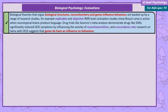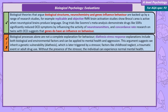Worth remembering all of them as we're going to use them again in the psychopathology and biopsychology units. We can also use the diathesis-stress model as an evaluation of the biological approach as a whole, pointing out the difficulty of separating the influence of nurture and nature on behaviour. This is another good evaluation to remember for OCD and schizophrenia.